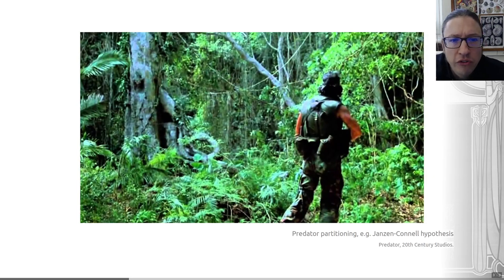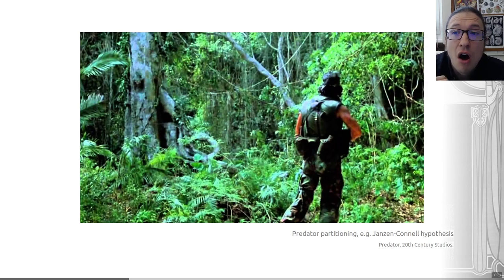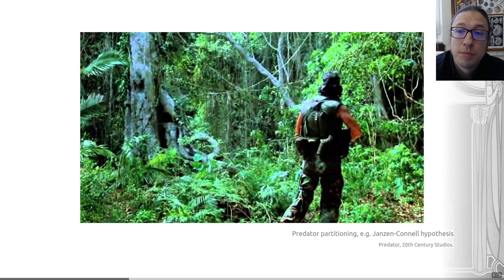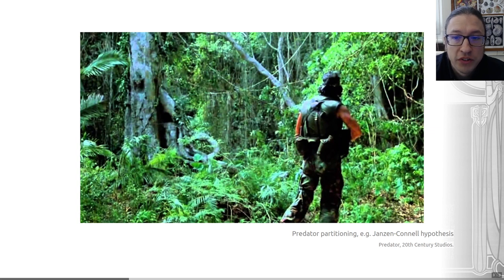There is also such a thing as predator partitioning. This occurs when one or multiple species are attacked differently by different predators. A specific example of predator partitioning is the Janzen-Connell hypothesis. This explains tree biodiversity in tropical rainforests, and posits that host-specific herbivores or pathogens prevent any one species from dominating the landscape.